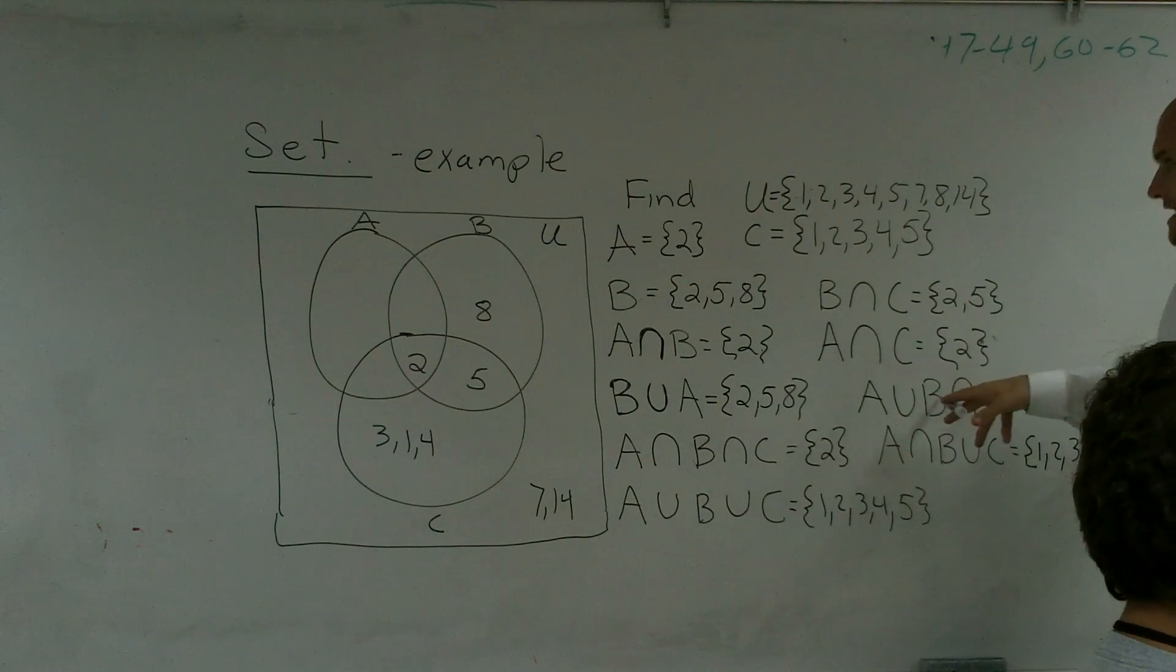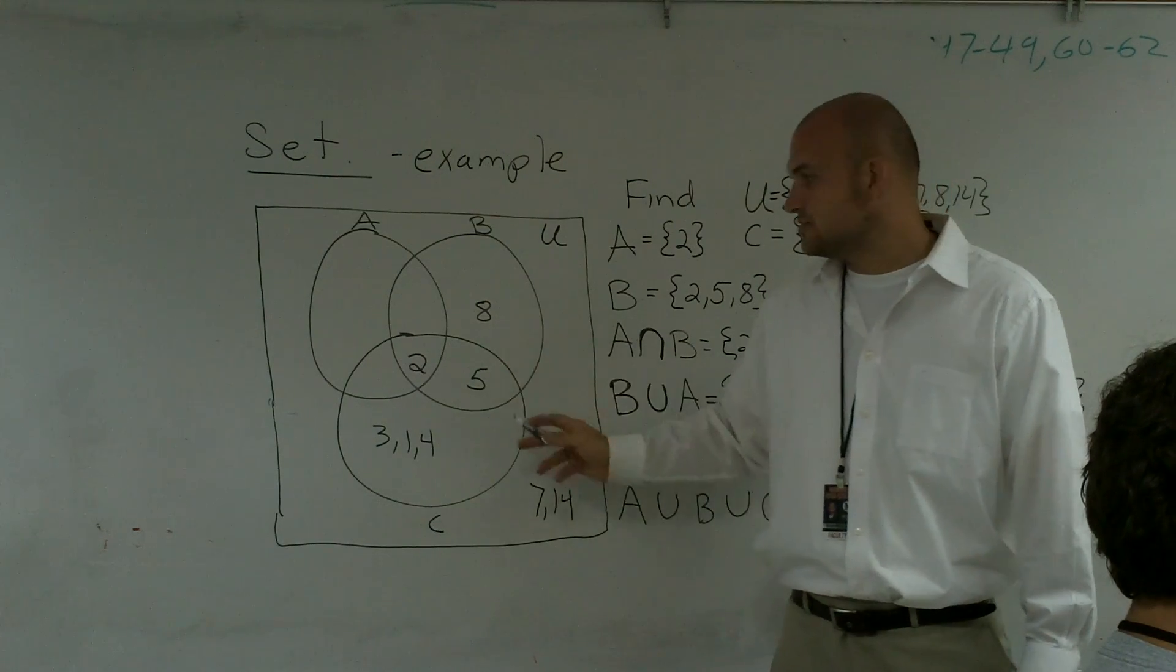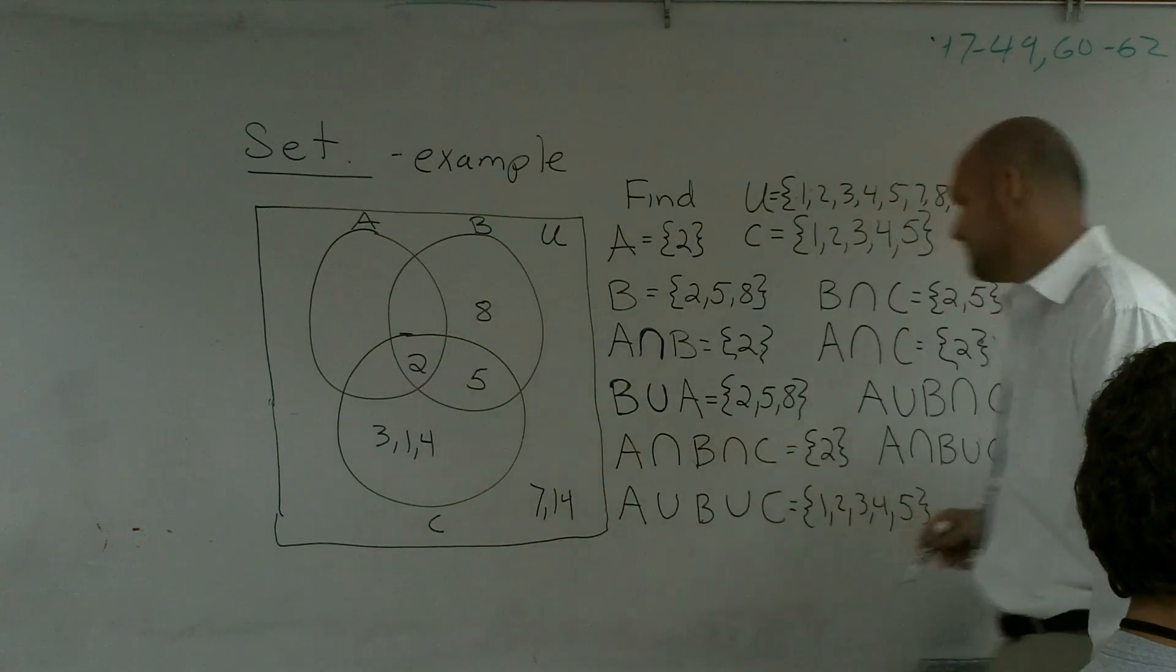So 2, 5, and 8 have in common with C. So we have A union B is 2, 5, 8, and then intersect C. So what does all 2, 5, and 8 have in common with C? Well, that's only 2 and 5.